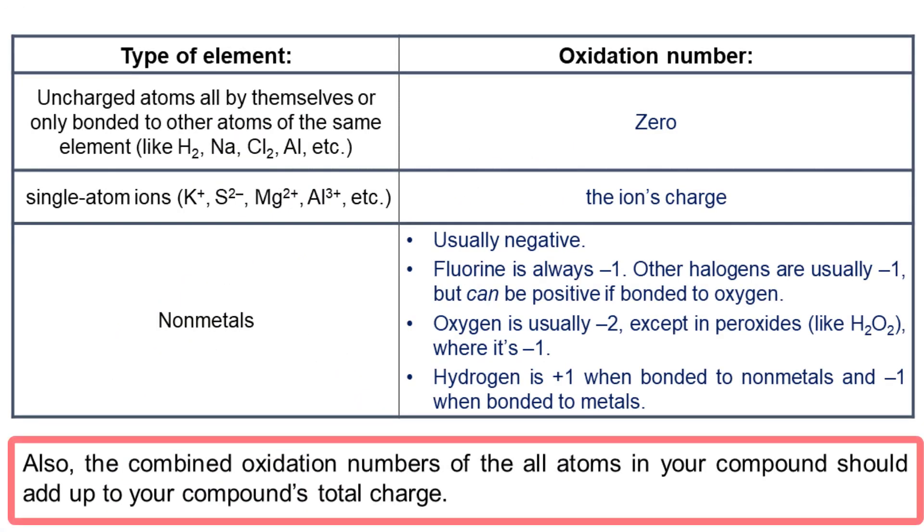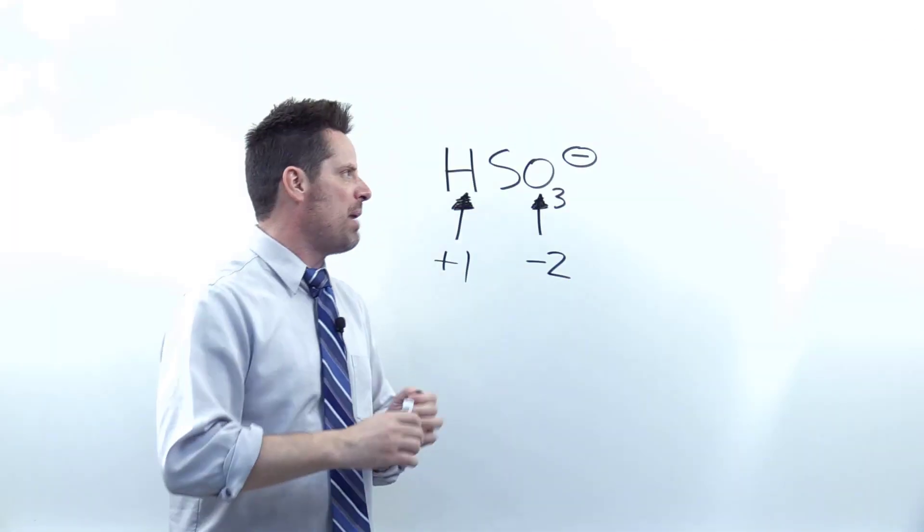Well, that takes us to this rule right here that says that when you add up all of the combined oxidation numbers for all of your atoms together, they should add up to equal the overall charge of your entire molecule. If you have a zero charge for your molecule, all of those oxidation numbers should add up to equal zero. If it's something else, they should add up to equal that something else.